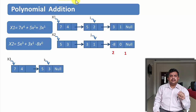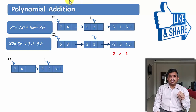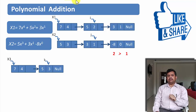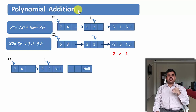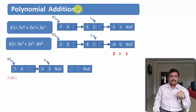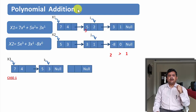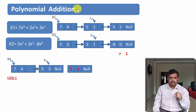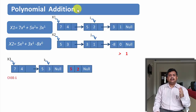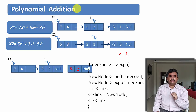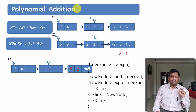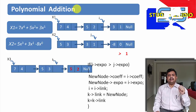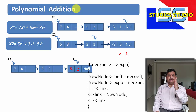Now looking at the nodes pointed by i and j, the exponent of i's term is 2 and j's term is 1, so 2 is greater than 1. I write the value of the i-th term in the new node and write the address of this new node as the next of k. Then I move both i and k forward.